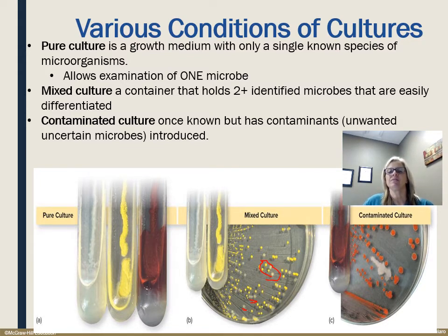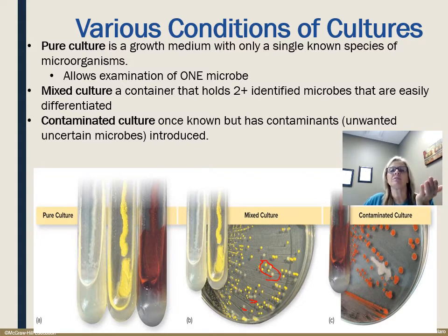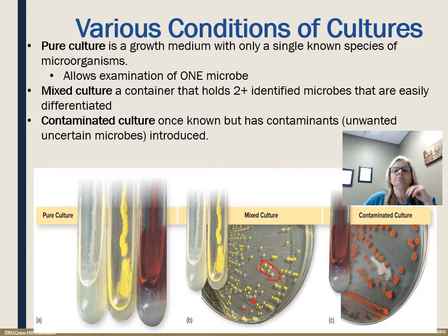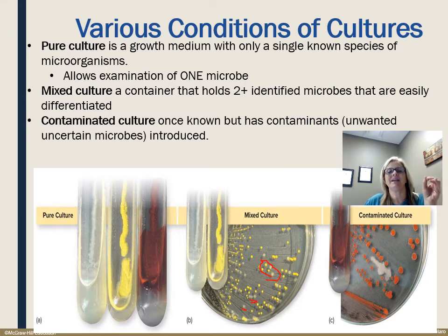Contaminants get into cultures when lids of petri dishes or test tubes are left open too long, allowing airborne microbes to enter. You should barely hold the lid open as you run your utensil along it — if you open it up all the way, you're breathing on it and getting microbes right out of your mouth. You can also get contamination by not properly sterilizing your equipment, like the inoculating loop — if you touched it, accidentally reused it, or laid it down on the table, it has gotten contaminated. Very easy to do.